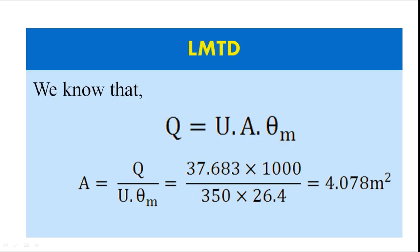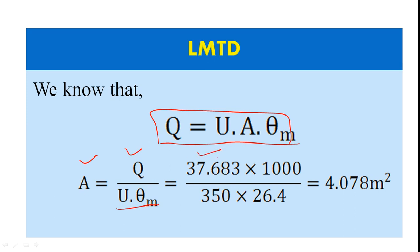We know that heat transfer rate Q = U · A · LMTD (theta_m). Therefore, the area of the heat exchanger A = Q / (U · theta_m). Q is 37,683 W (multiplying by 1000 to convert from kJ/s), U is 350, and theta_m is 26.4. The area of the heat exchanger comes out to be 4.078 m². Thus we have solved the numerical.